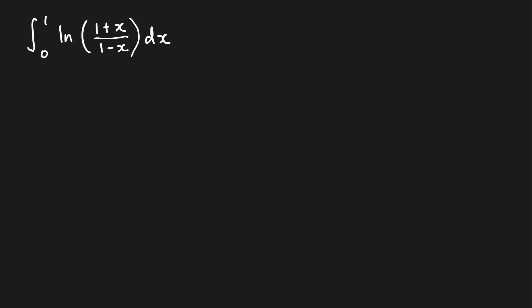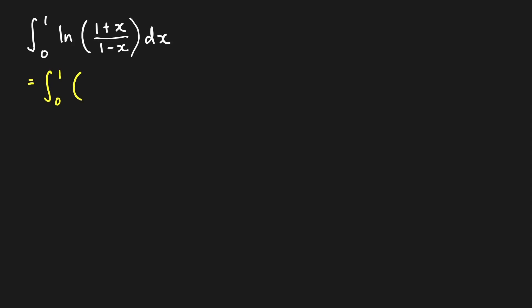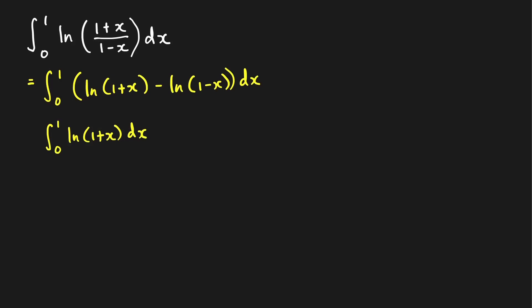Now let's look at this next integral. We know how to handle integrals like ∫ln(u) du, and the ln of this quotient can be written as a difference of logs. So we write it as the integral from 0 to 1 of ln(1+x) dx minus the integral from 0 to 1 of ln(1−x) dx.